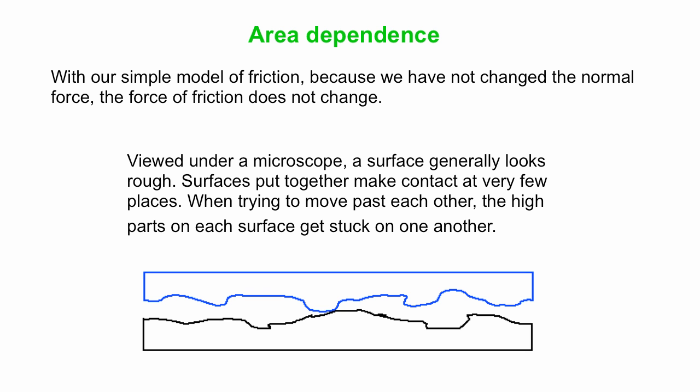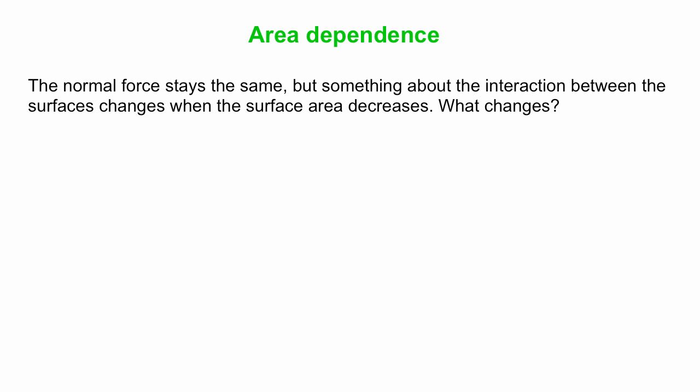If you view this under a microscope, what happens there is, even if you have large areas which you look to be touching, they're only actually touching in a very small number of places. When you try to move past each other, the kind of peaks on each surface get stuck on one another. If you change the area, reduce the area, normal force stays the same, but what changes?